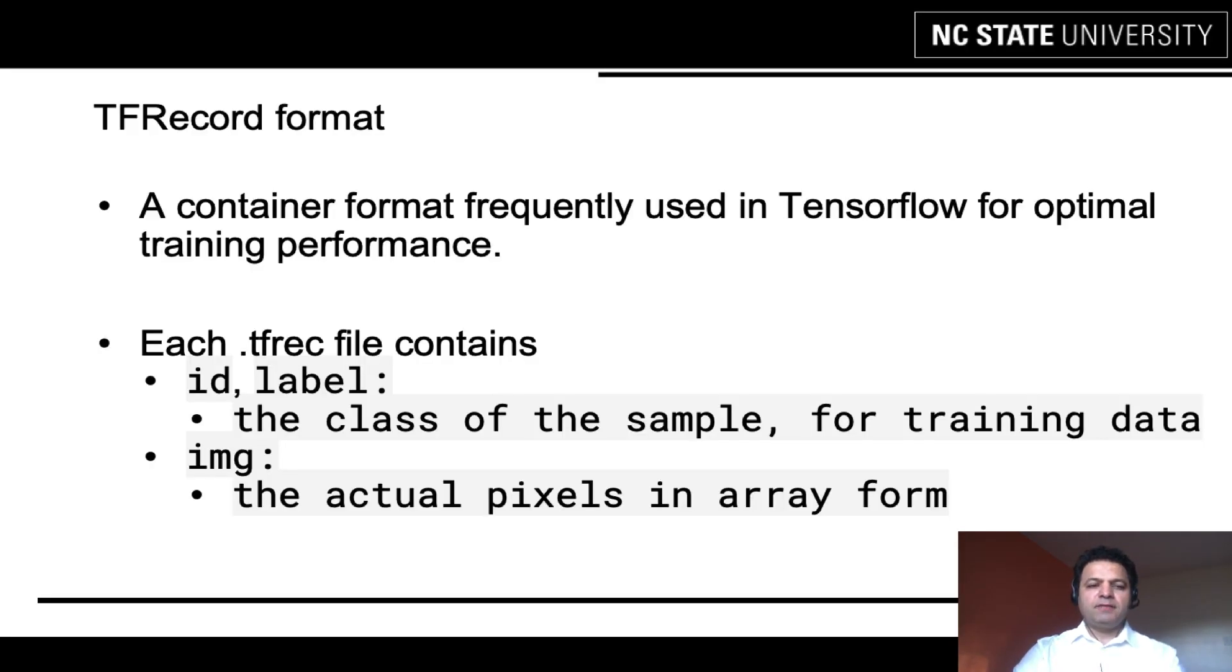The data was given to us not as a pair of image and CSV files. They were actually encapsulated into one format TFRec extension or TFRec format. TFRec format is a container format frequently used in TensorFlow for optimal training performance. Each dot TFRec has three attributes. One is the ID and the label, which tells in what class it is, one of those 104 classes. And also the array form of actual image.